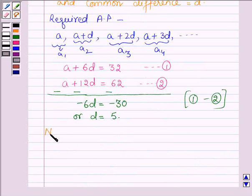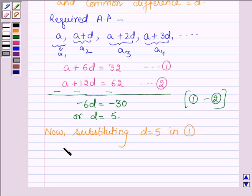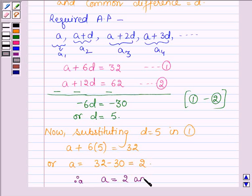Now, substituting the value of D, which is equal to 5, in equation number 1 to get the value of A. Therefore, we have A plus 6 into 5 is equal to 32, or we have A is equal to 32 minus 30, which is equal to 2. Therefore, A is equal to 2 and D is equal to 5.